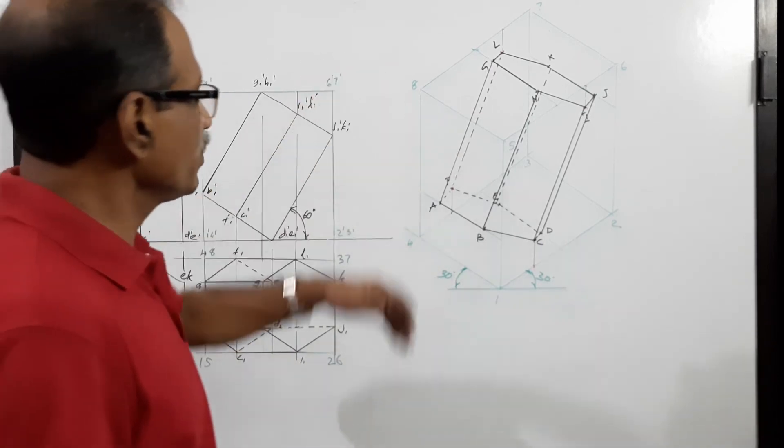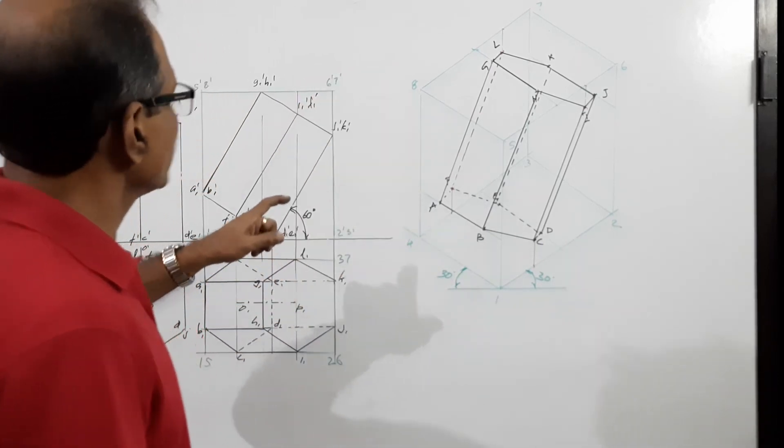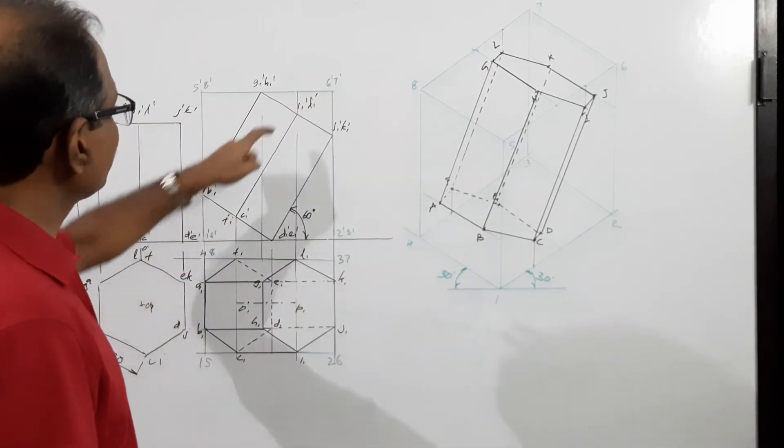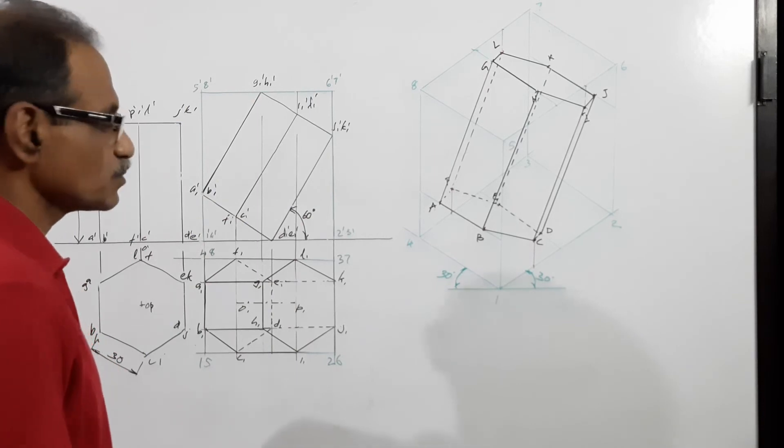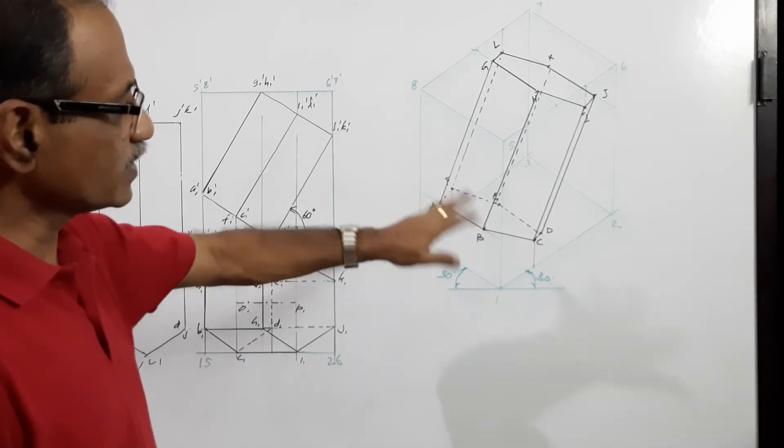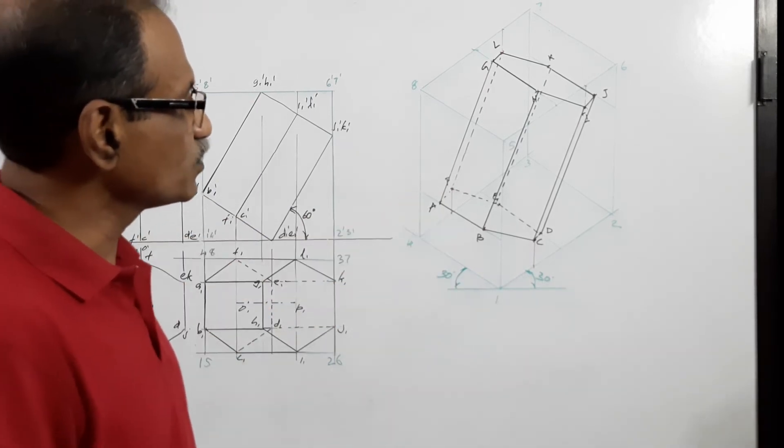The back side will not be visible. F-L will also not be visible. All other edges will be visible.